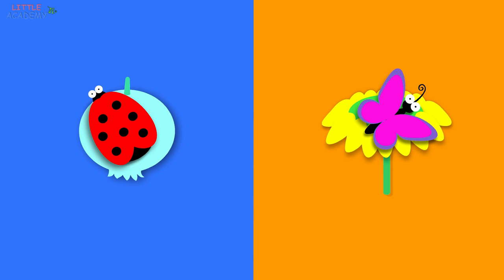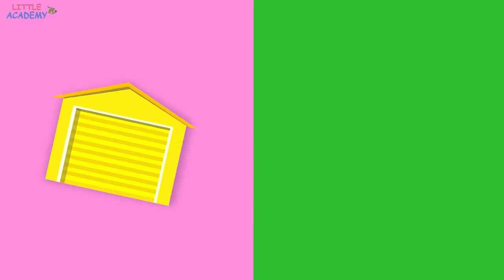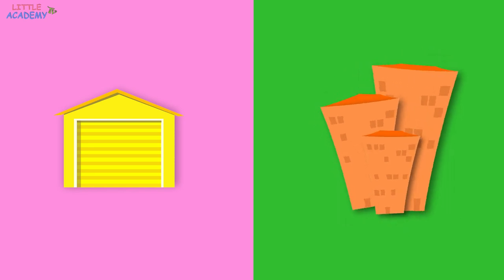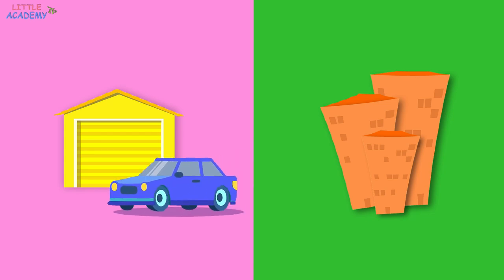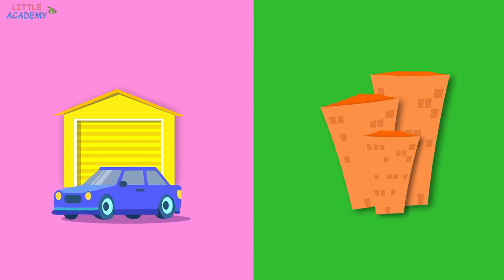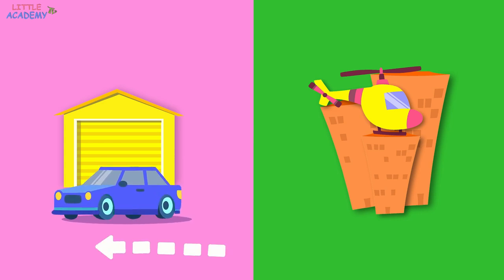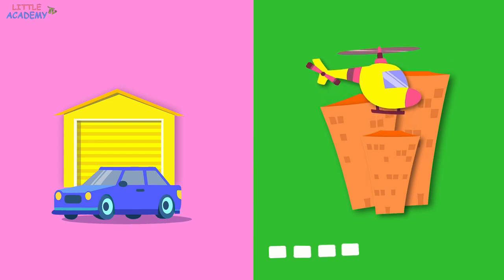Once again. The color pink is on the left. The color green is on the right. The color green is on the left. The car is driving to the left. The helicopter is flying to the right. This is the left side. And this is the right side.